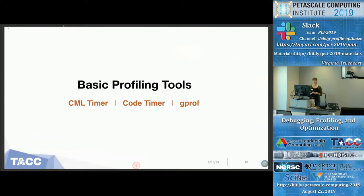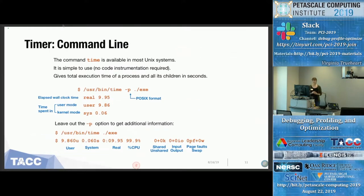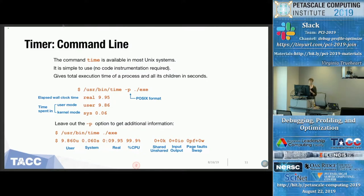At the very top level there are basic profiling tools that should be available on all machines you have access to. One is the command line timer, one is a code timer dependent on the language you're coding in, and then a system tool called GPROF. The command line timer is just the use of /usr/bin/time. It's a really straightforward tool — the only thing it's doing is tracking the time of each process in your run and giving you the total time for all runs, generally in seconds.